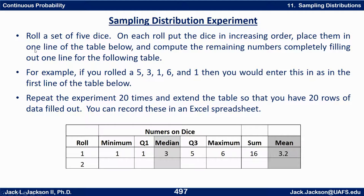But what happens if we do this: suppose we roll a set of five dice. On each row, we'll put the dice in increasing order, place them on one line of a table, and then figure out the median, the sum, and the mean. So we're going to find the median and the mean for that roll.